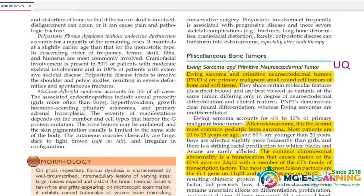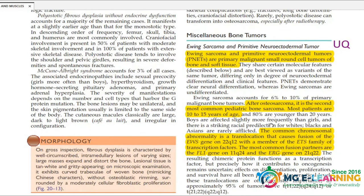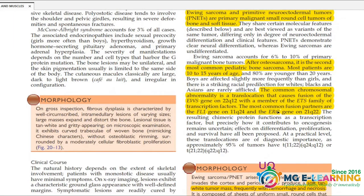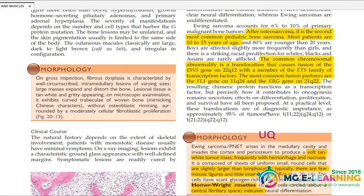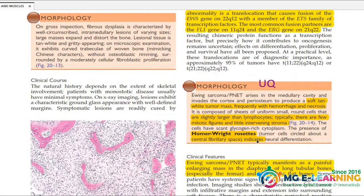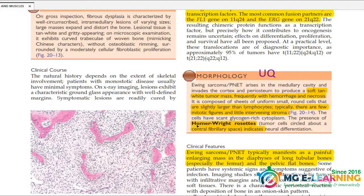Miscellaneous bone tumor: Ewing sarcoma and primitive neuroectodermal tumor — this is a very important UQ. Note which gene, which mutation, which age is involved, and where the mutation is. You need to do this with a good method. Morphology is an important UQ — you can find the tumor cells; this is a very unique MCQ point.